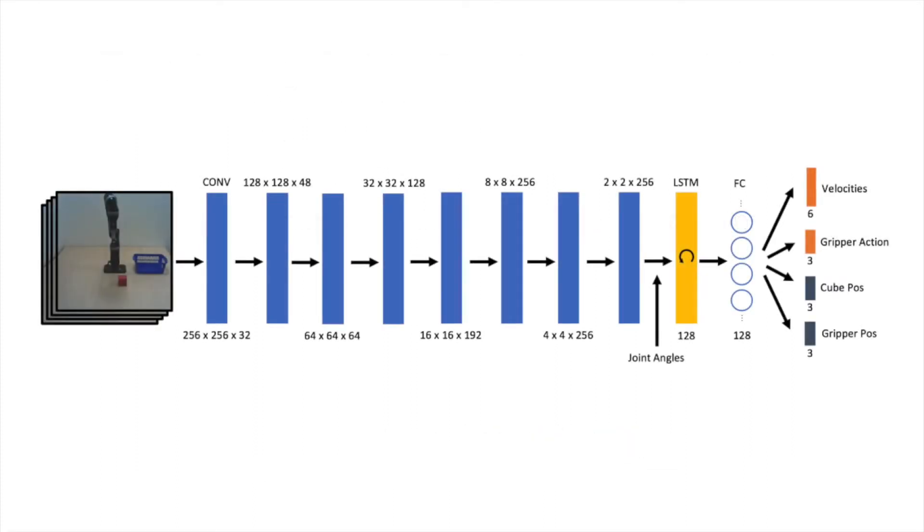We accomplish the goal of transferring end-to-end controllers from simulation to the real world, where images and joint angles are continuously mapped directly to motor velocities through a deep neural network.